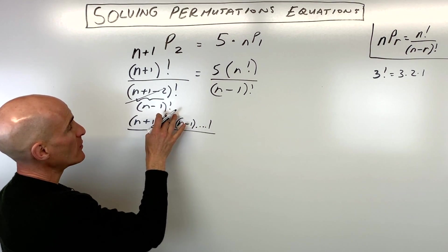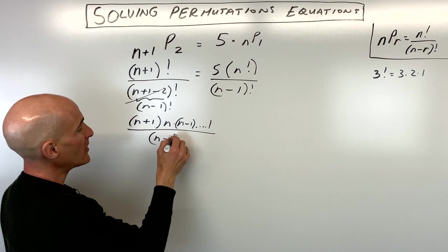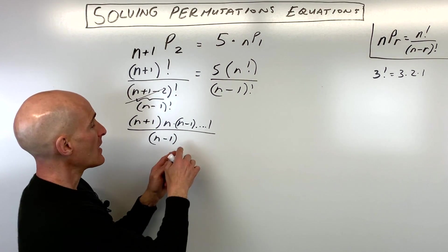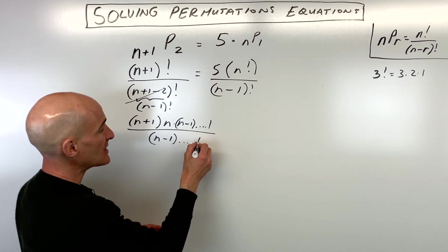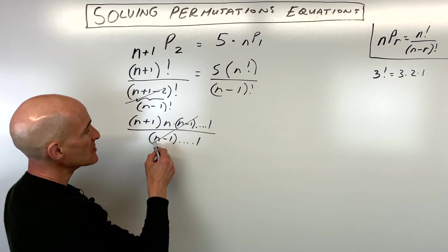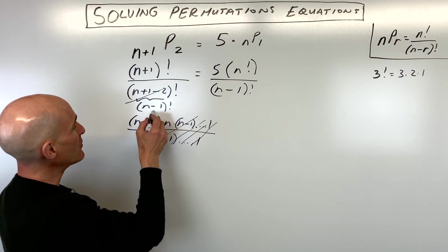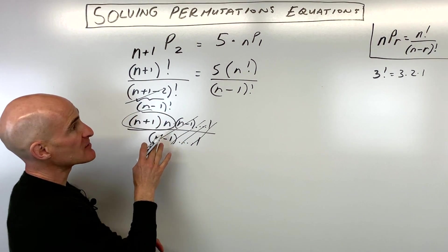And that's what (n minus 1) factorial is as well: (n minus 1) times (n minus 2) times (n minus 3), we keep subtracting one more each time until we get down to 1. Notice how these are canceling all the way down to 1, so we're just left with (n+1) times n on the left side of the equation.